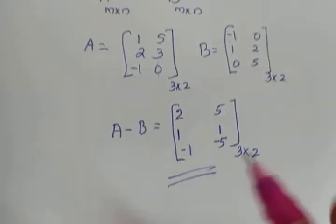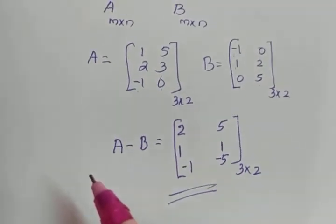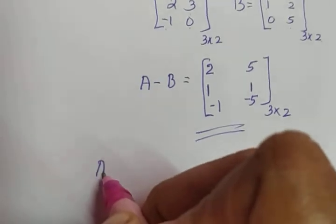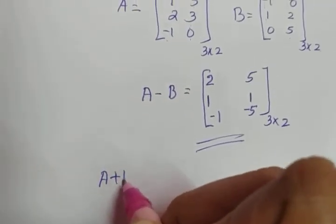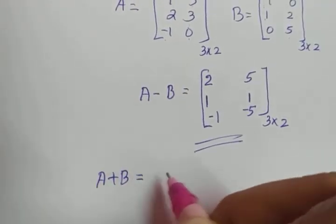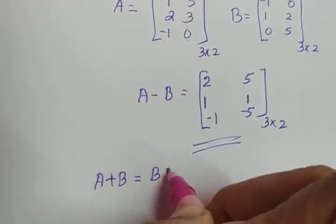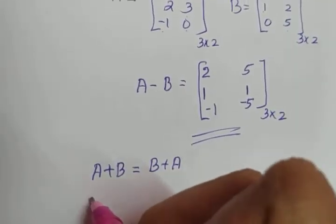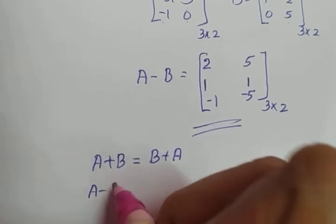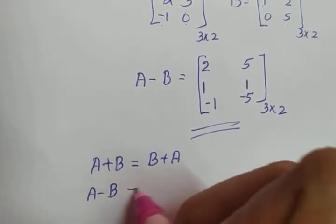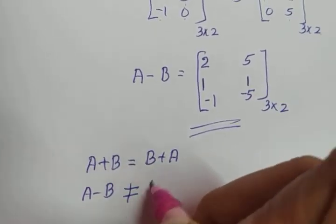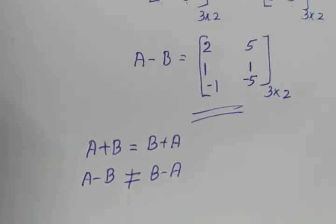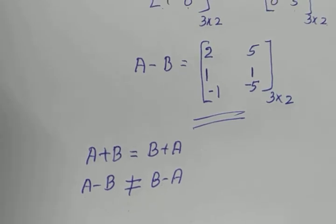There are properties for these operations. A plus B equals B plus A — addition of matrices is commutative. However, A minus B is not equal to B minus A — subtraction is not commutative.